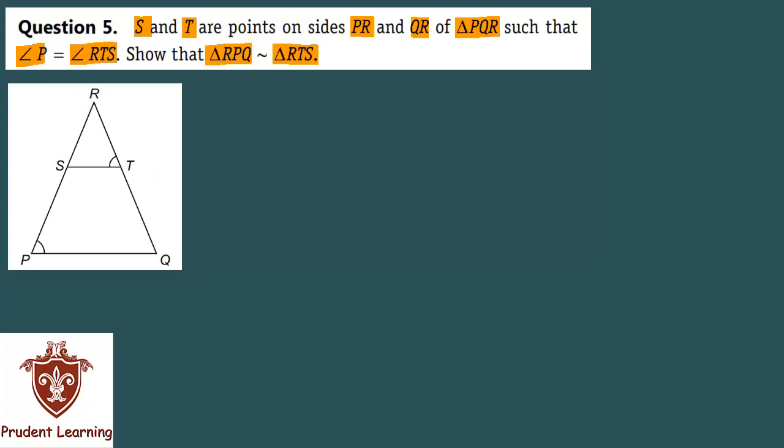It's easy to see if I can tell you - with these two triangles, this small triangle angle is equal to triangle P. And if you see angle R, two are common. Triangle RTS and triangle RPQ both have angle R common. Since two angles are the same, we can prove this.